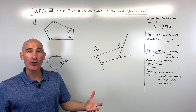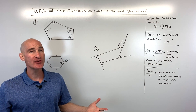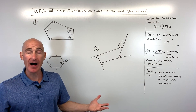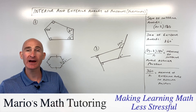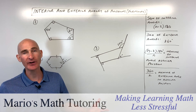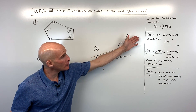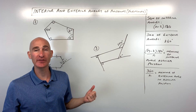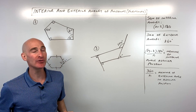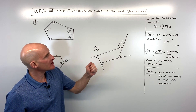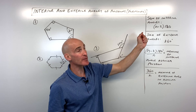In this video, we're going to talk about interior and exterior angles in polygons — some which are regular polygons, some which are not regular polygons — and we're going to go through the formulas involved with solving these problems. We're going to go through six examples, and let's start off by talking about some of the formulas first.